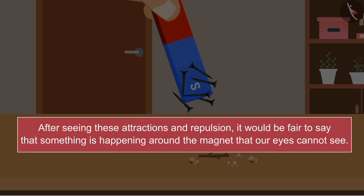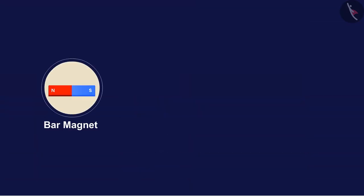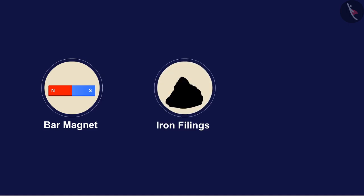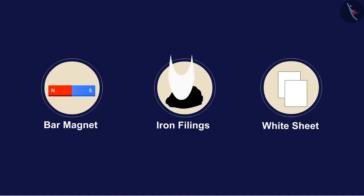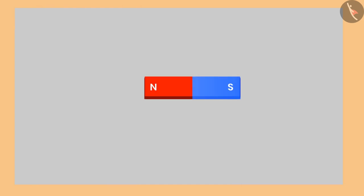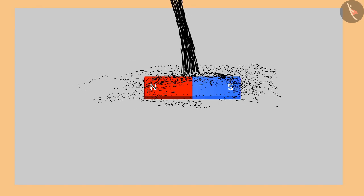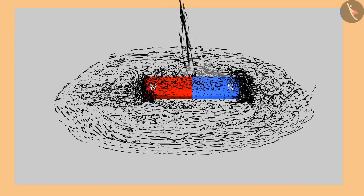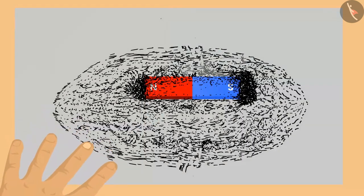To understand this, let's perform an activity. To perform this activity, we need a bar magnet, iron filings, and a white sheet. Place the bar magnet at the center of the sheet and slowly pour iron filings over it. Tap the sheet like this two to three times.